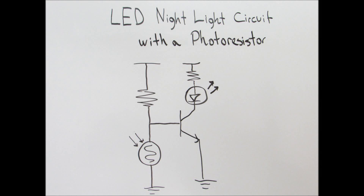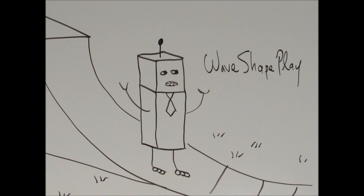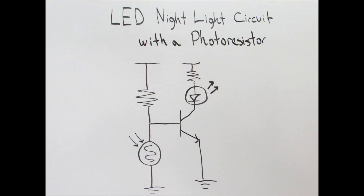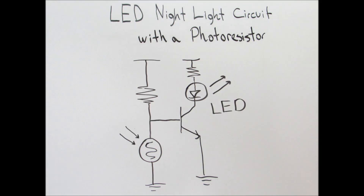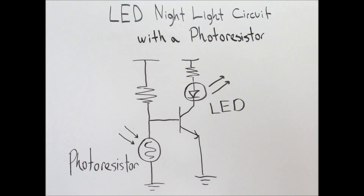In this video I will be discussing the LED nightlight circuit with the photoresistor. This circuit uses one NPN transistor, two resistors, an LED, and a photoresistor.